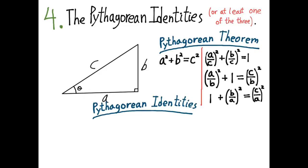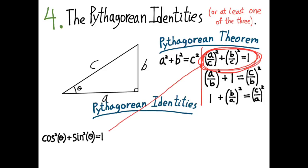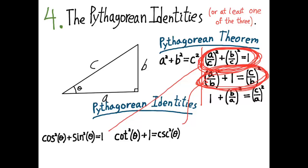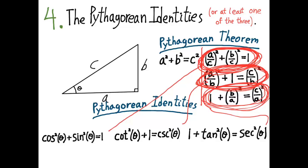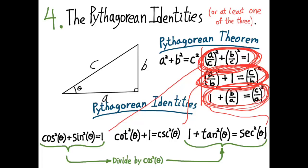When you write them in terms of trig functions, you get the Pythagorean identities. The first is cos²θ + sin²θ = 1. The second is cot²θ + 1 = csc²θ. The third is 1 + tan²θ = sec²θ. You only need to memorize one of these, because if you start with cos²θ + sin²θ = 1 and divide each term by cos²θ, you will get the third equation: 1 + tan²θ = sec²θ.